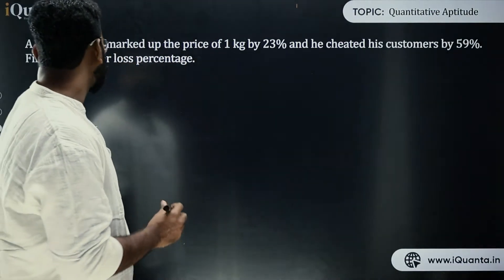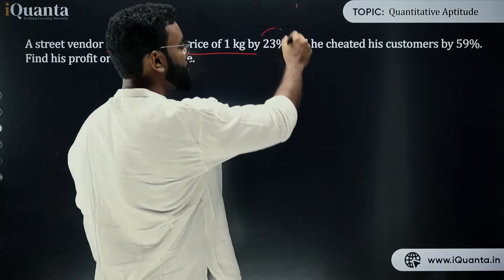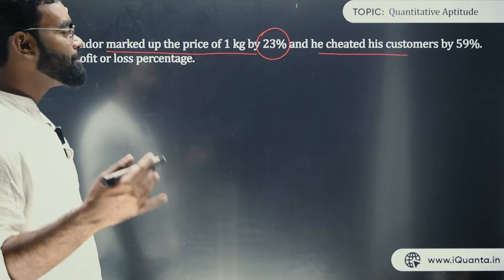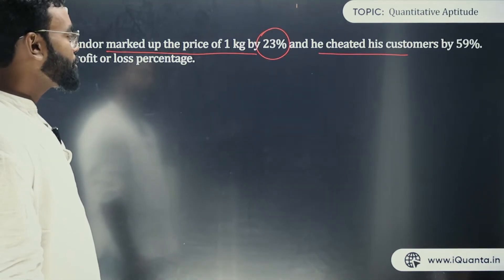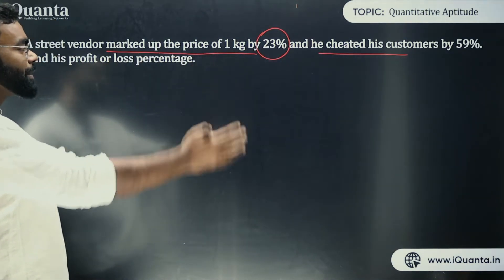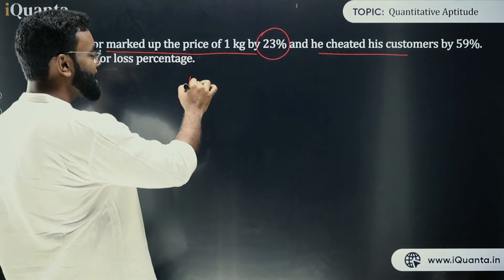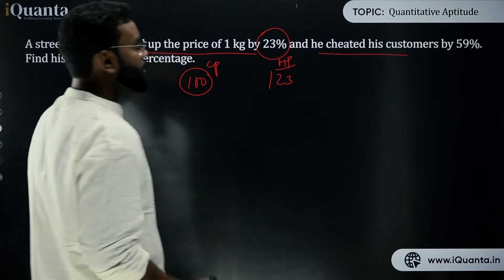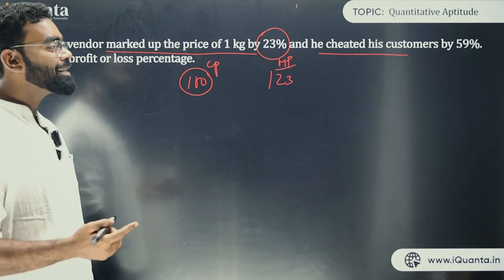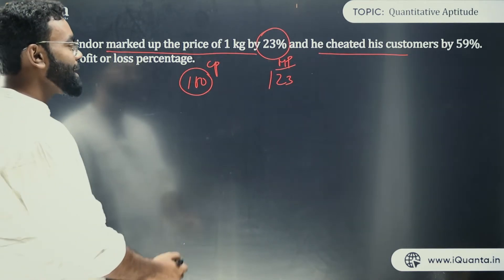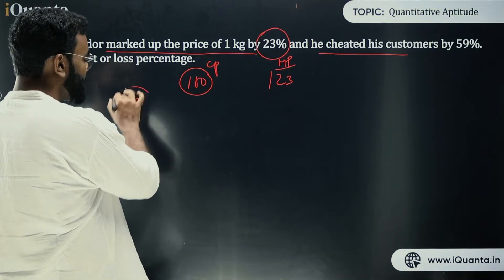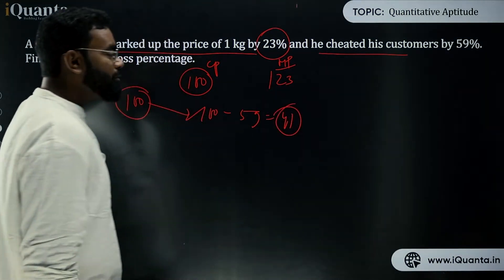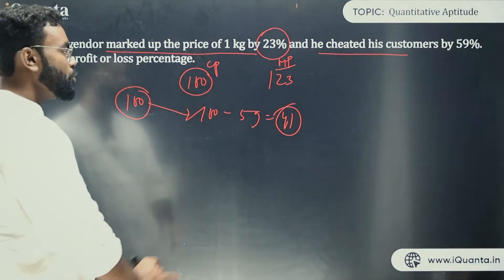Here is the first question: a street vendor marked up the price of 1 kg by 23% and cheated his customer by 59%. Find his profit or loss percentage. So the vendor marked up by 23%, meaning if the cost price is 100, the mark price is 123. He cheated by 59%, meaning while claiming to sell 100, the customer is actually getting 100 − 59 = 41.